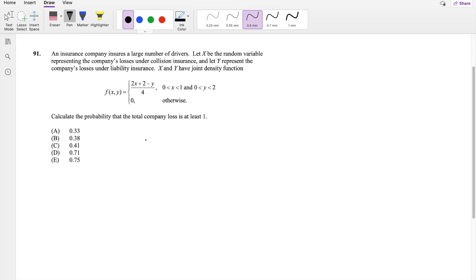So they say calculate the probability that the total company loss—so total is like adding up the losses for X and adding up the losses for Y—is at least 1. So it's greater than 1.